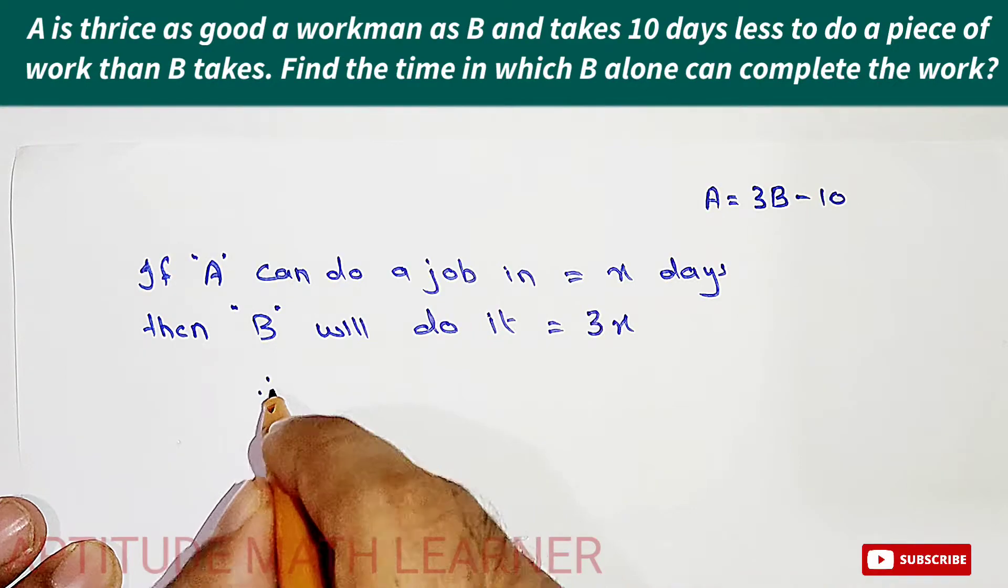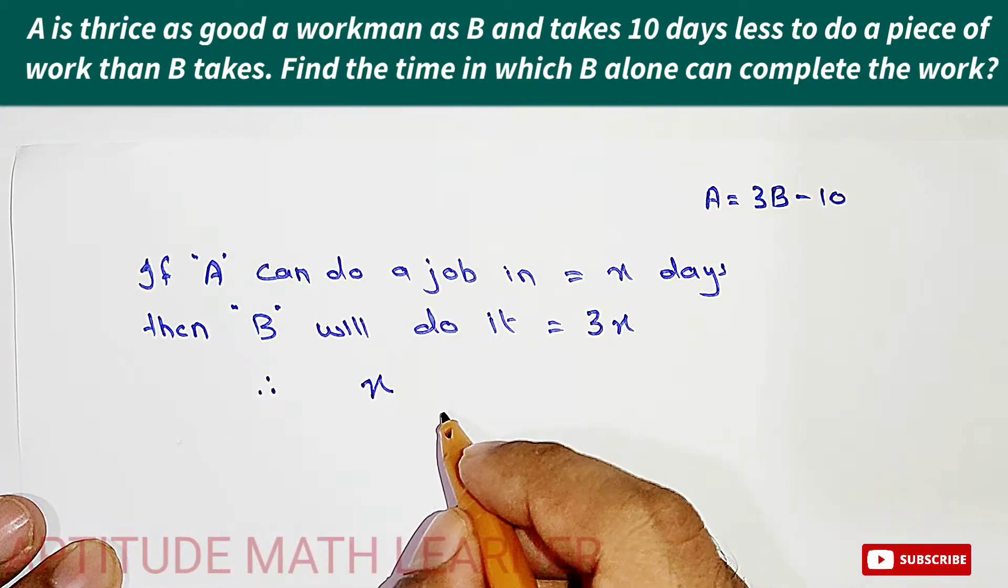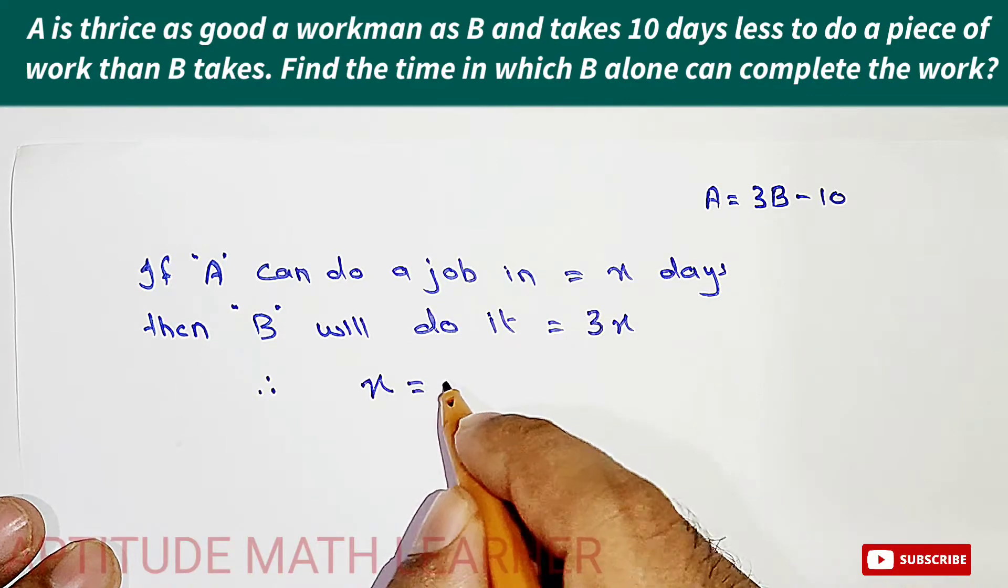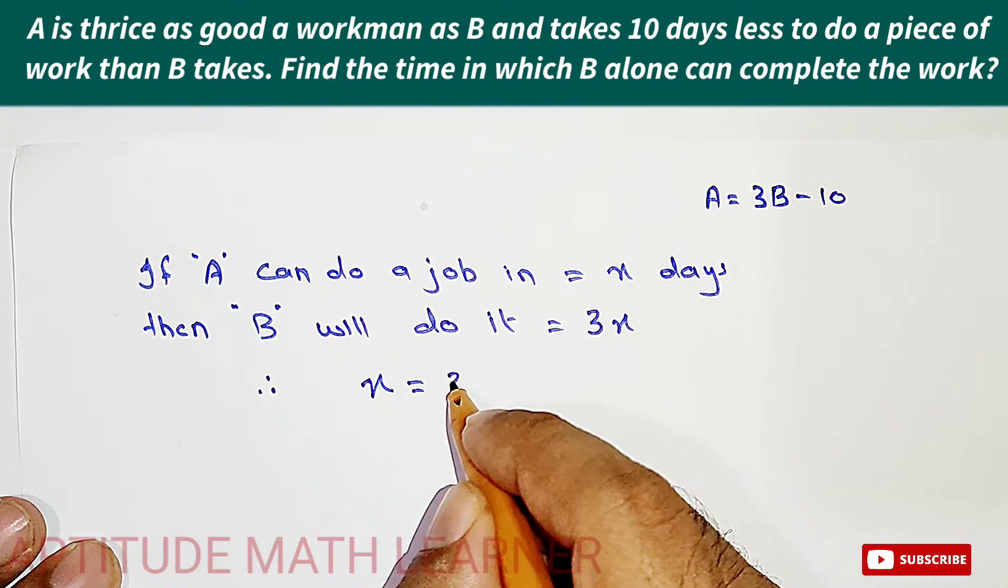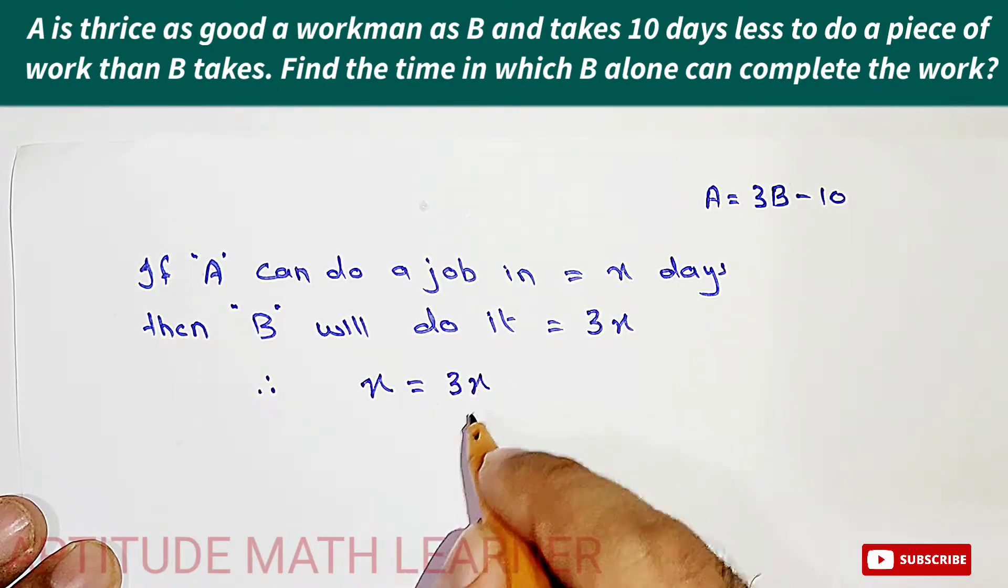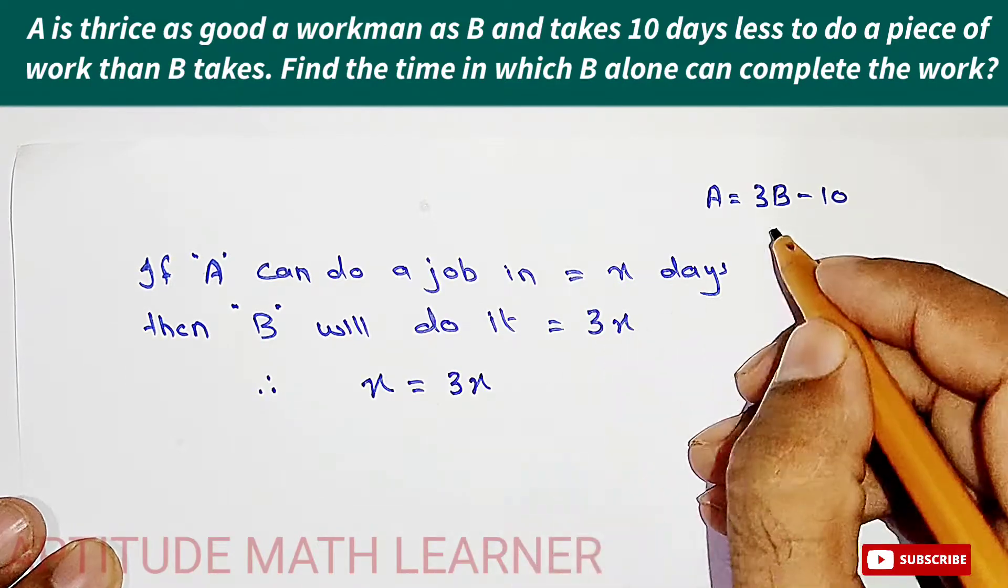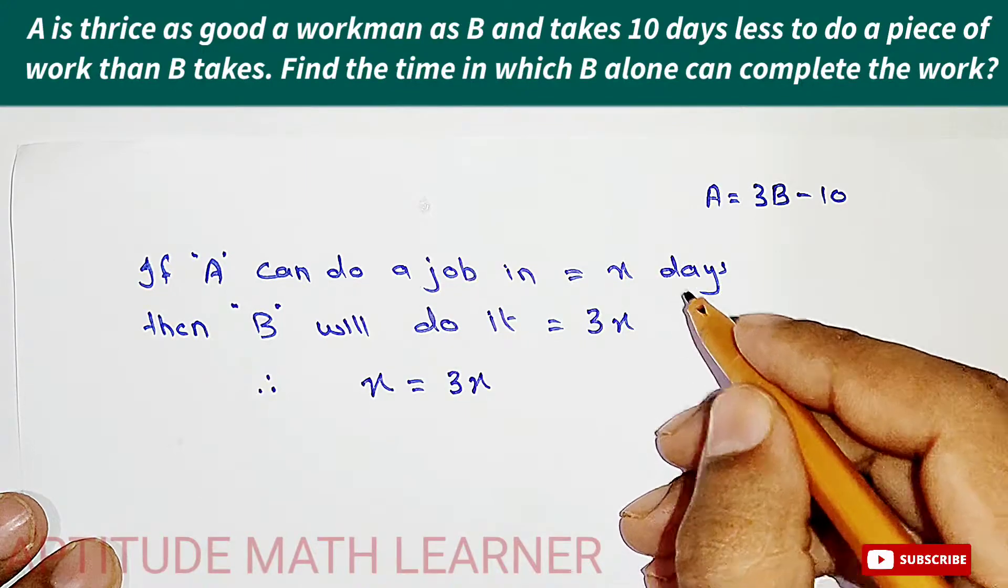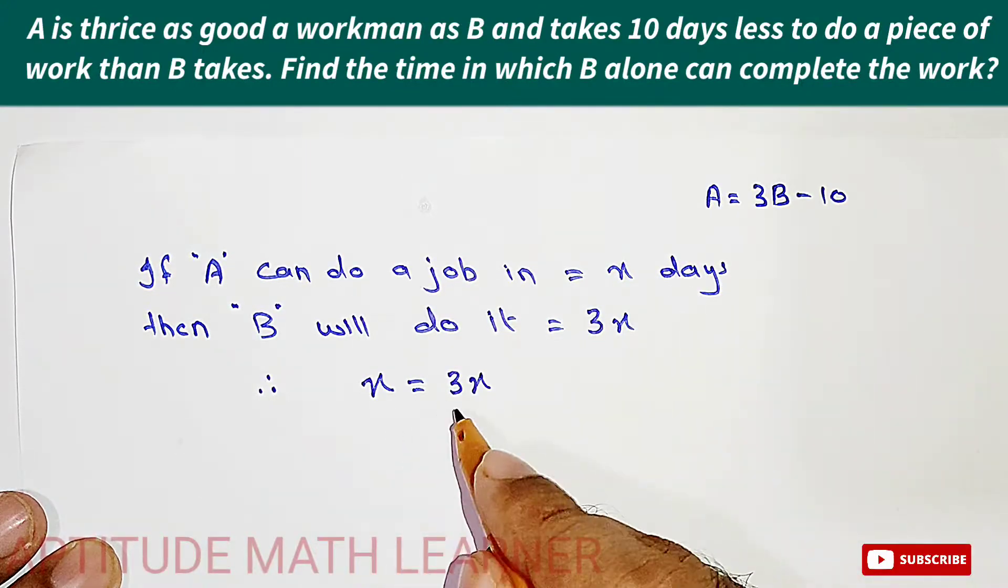According to the question, this is the work of A, and this is three times more efficient than B. So this is for B. This is the same thing, but we have just taken the days in x form.